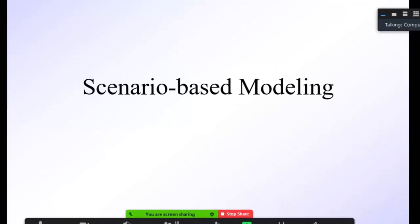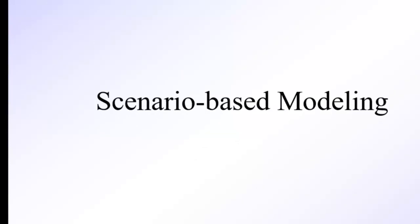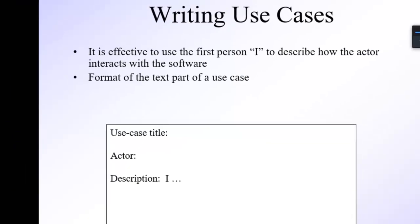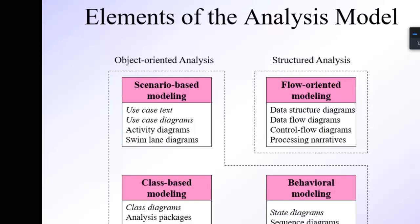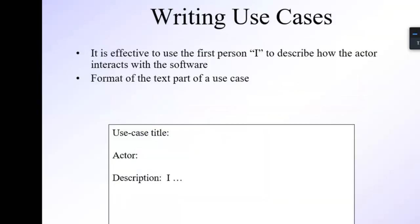Second is scenario-based modeling, in which we draw UML diagrams from the user's point of view. Going back to the analysis models — we discussed flow-oriented modeling first, in which we draw DFDs, control flow diagrams, and processing narratives. That was structured analysis. Now in object-oriented analysis, we discuss scenario-based modeling, which includes use case text, use case diagram, activity diagram, and swim lane diagram. After that comes class-based modeling, then behavioral modeling.